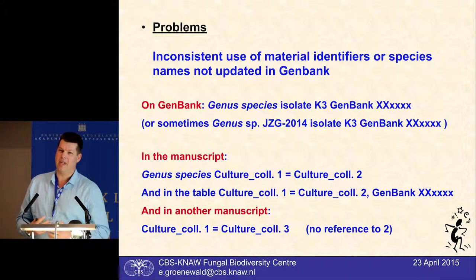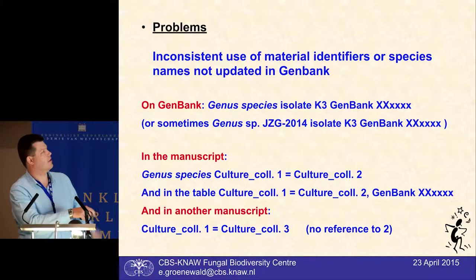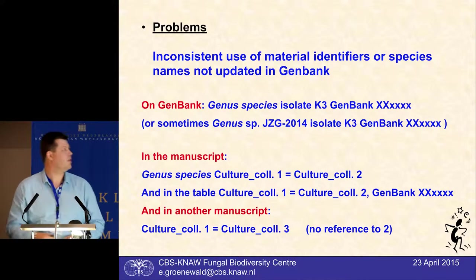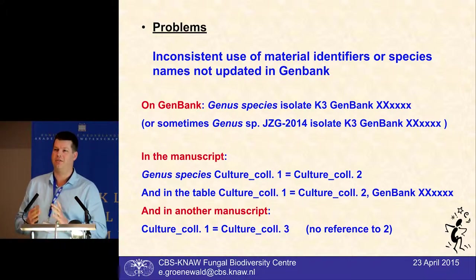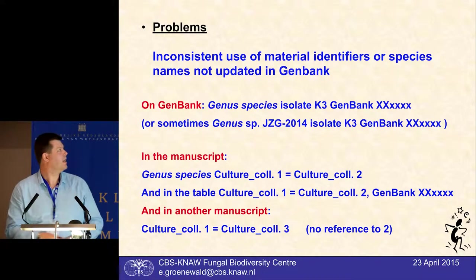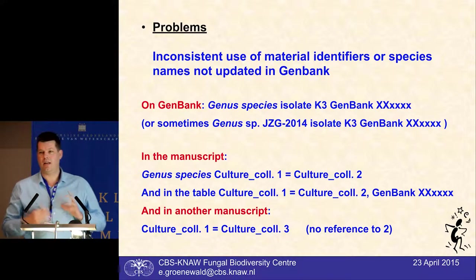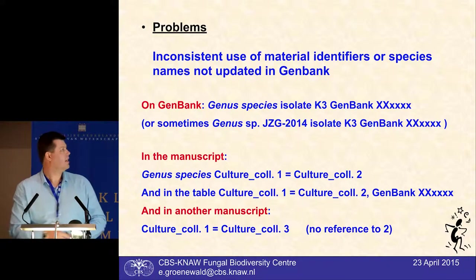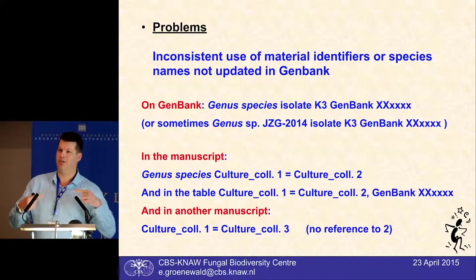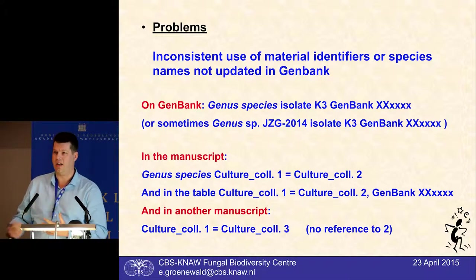I'm not a mycologist in the strict sense — I'm a trained molecular biologist, so I use GenBank a lot. Something that is very confusing is that you have a species described with isolate K3 in GenBank with a GenBank number, but if it's a very new species, it might be listed as genus name SP with initials and a date. Then in the manuscript, you have a published species name and two culture collections, and the table says culture collection 1 equals 2 with the GenBank number, with no reference to K3. You might also have an additional culture collection number that links to only one of them. You need to compile all of these to make sense of what data is actually out there for that specific species.